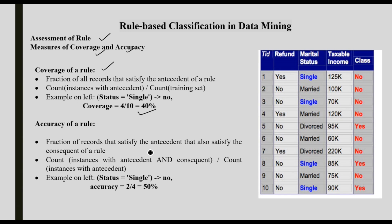Accuracy is the fraction of records that satisfy the antecedent and also satisfy the consequent of the rule. For the rule: status = single → class = no. Status = single gives 4 records. Of those 4, 2 have class = no and 2 have class = yes. So accuracy = 2/4 = 50%. These two measurements — coverage and accuracy — are important for evaluating rules in rule-based classification.